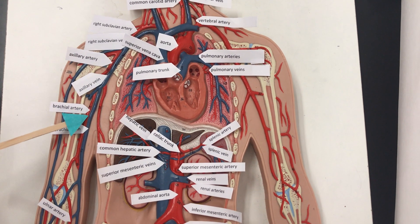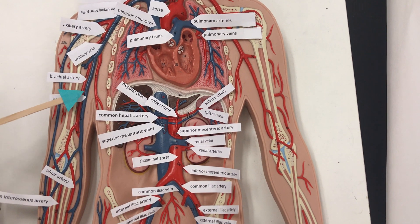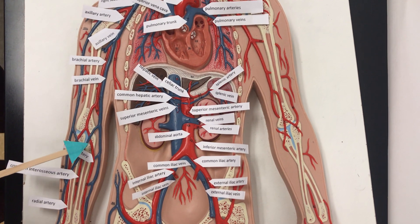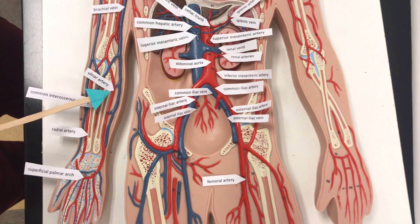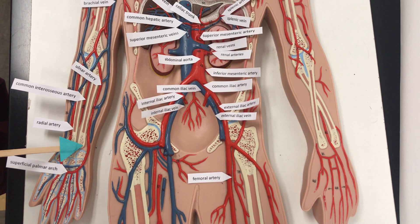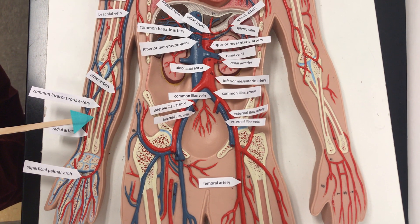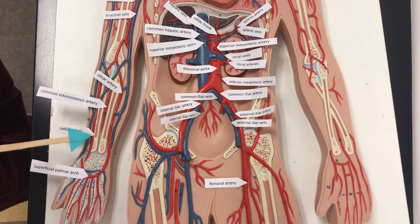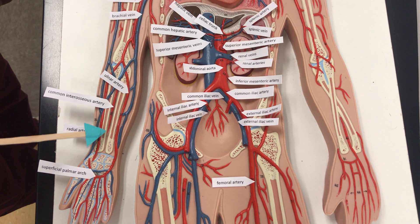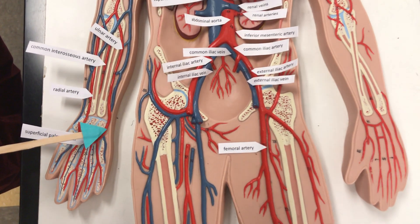The brachial artery — brachial means arm — is taking blood down the arm. The brachial vein is taking it back to the heart. Down in the forearm we have the ulnar artery on the ulnar side, near the ulna bone. We have the common interosseous artery between the ulna and the radius, the radial artery on the radial side, and then the superficial palmar arch in the hand.